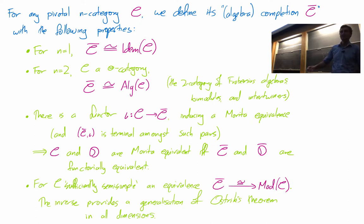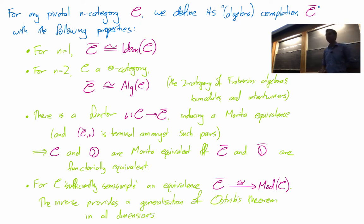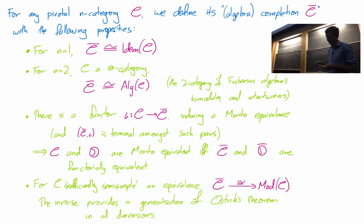Question: what dimensions are being used? The n in n-categories describes string diagrams in n dimensions or topological phases in n dimensions. Always think of an n-dimensional bulk with an n-minus-1 dimensional boundary that is the module being acted on.